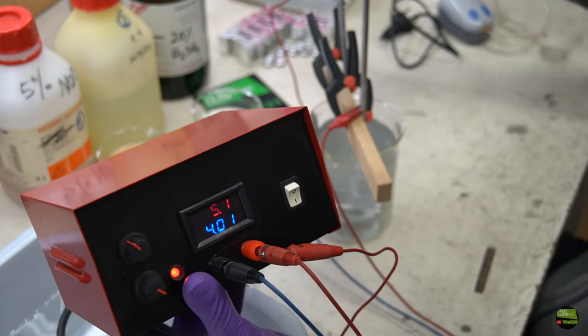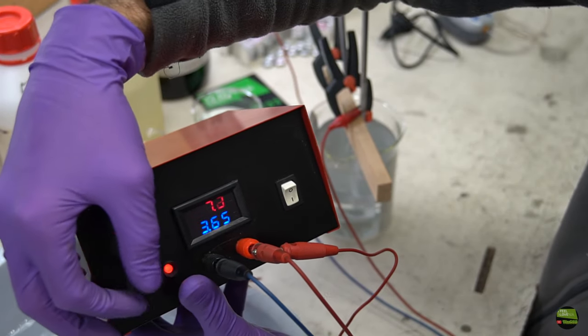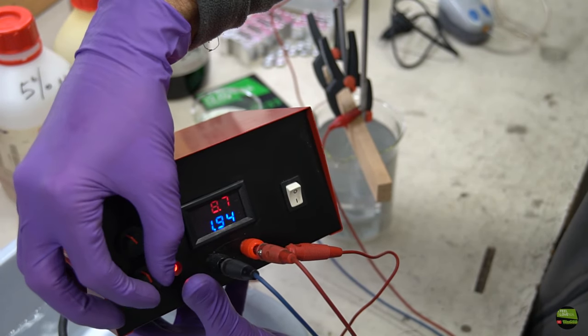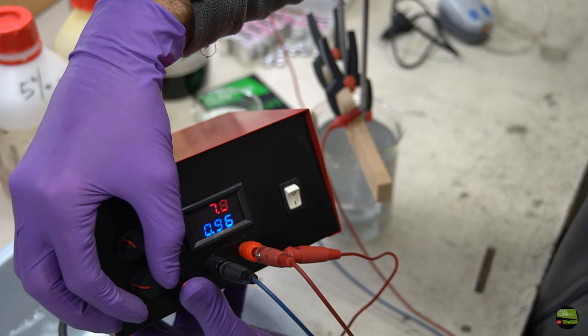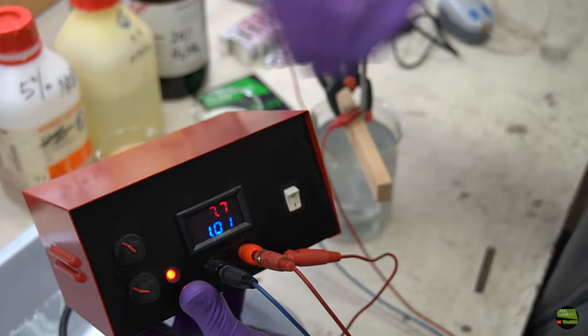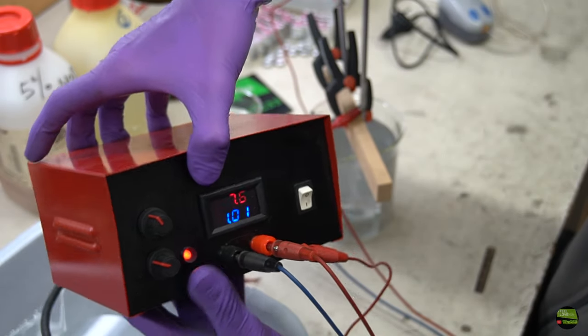As I said, there are many details in anodizing. One of them is current, which is calculated by some formula which includes surface size of the part we want to anodize. But I simply limit current to one amp, which is effective and not too high so it doesn't heat up the acid.